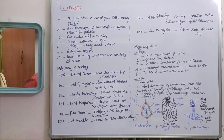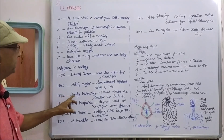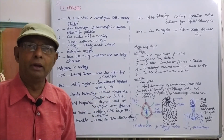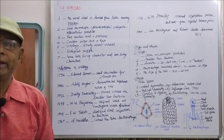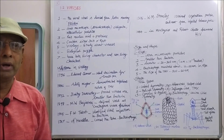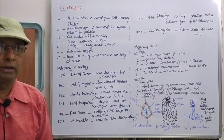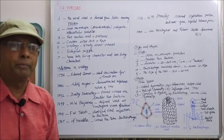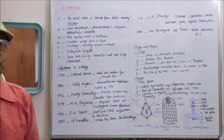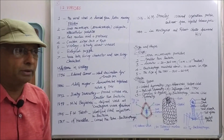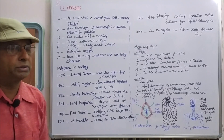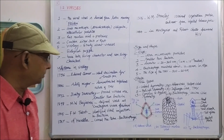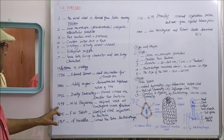In the year 1892, Dmitry Ivanovsky proved that viruses are smaller than bacteria — smaller than the smallest bacteria. Such very small organisms can only be identified, observed, and studied in structural detail through an electron microscope.